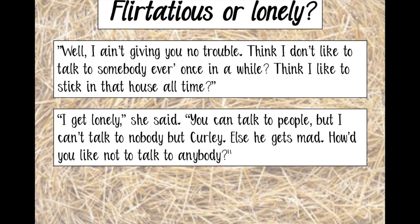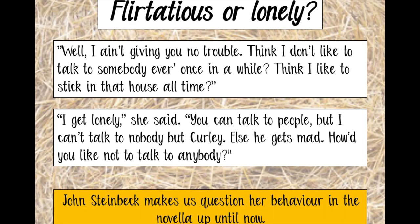And then we have these quotes she says to Lennie at the very end, in the final chapter: 'Well, I ain't giving you no trouble. Think I don't like to talk to somebody every once in a while? Think I like to stick in that house all the time? I get lonely,' she said. 'You can talk to people, but I can't talk to nobody but Curly, else he gets mad. How do you like not to talk to anybody?' Here Steinbeck really emphasises how lonely she has been, and makes us look back at the rest of the text and question: was she being flirtatious, or did she just want to talk to anybody?